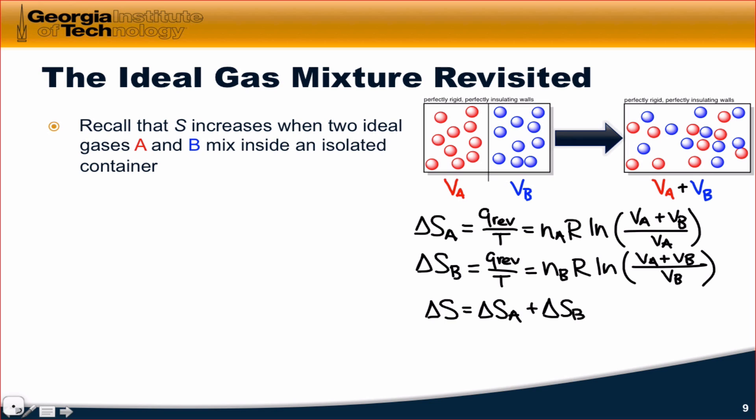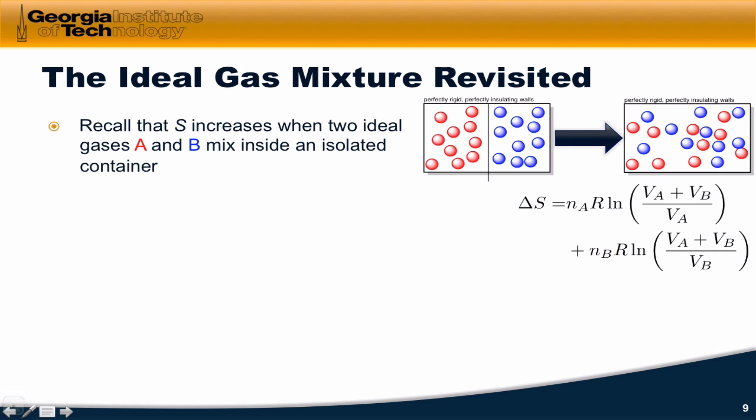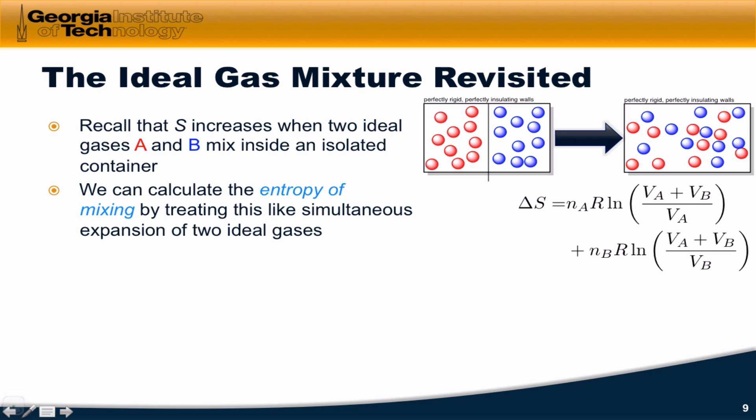The total entropy change for the entire isolated system is just equal to the sum of the two. And according to the second law of thermodynamics, since we're looking at a perfectly rigid, perfectly insulated system, that is an isolated system, this entropy change better be greater than zero. In fact, if we add the two together and get this expression, we find that this is always greater than zero, because the sum of the two volumes, VA plus VB, must be greater than the individual starting volumes, V sub A and V sub B.